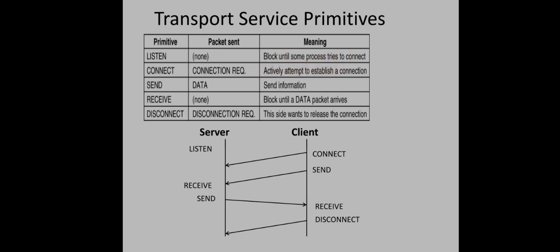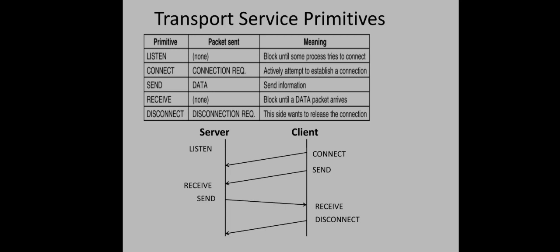Once the server is in the listen state, the client can try to access data. To do so, the client must first establish a connection — that is the second primitive: connect. The client sends a connect request to the server, along with a packet containing details such as the client port number. That packet is sent with the corresponding connection request.